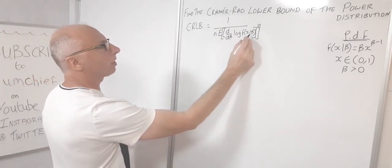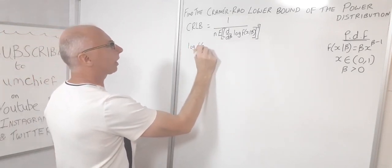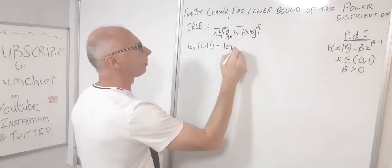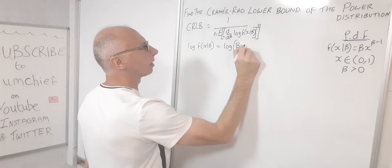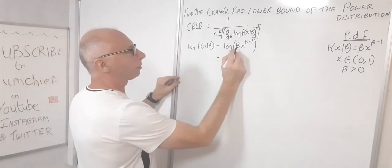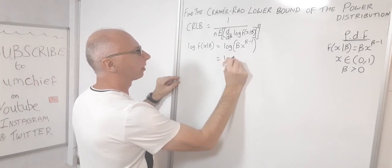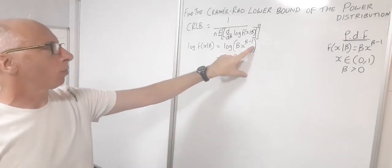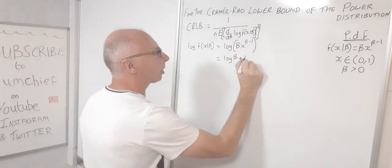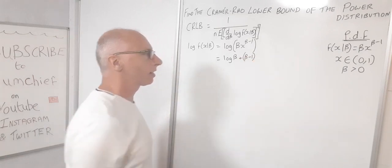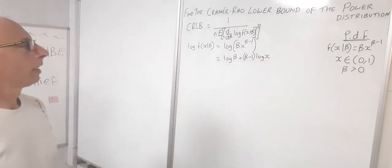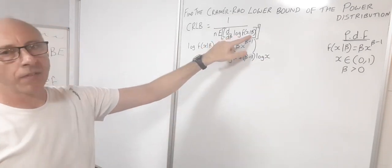We need to work out the value inside the formula, so let's take the log of f(x|β). That's the log of β·x^(β-1). Using log properties, since it's a product, we add: log(β) plus (β-1)·log(x).